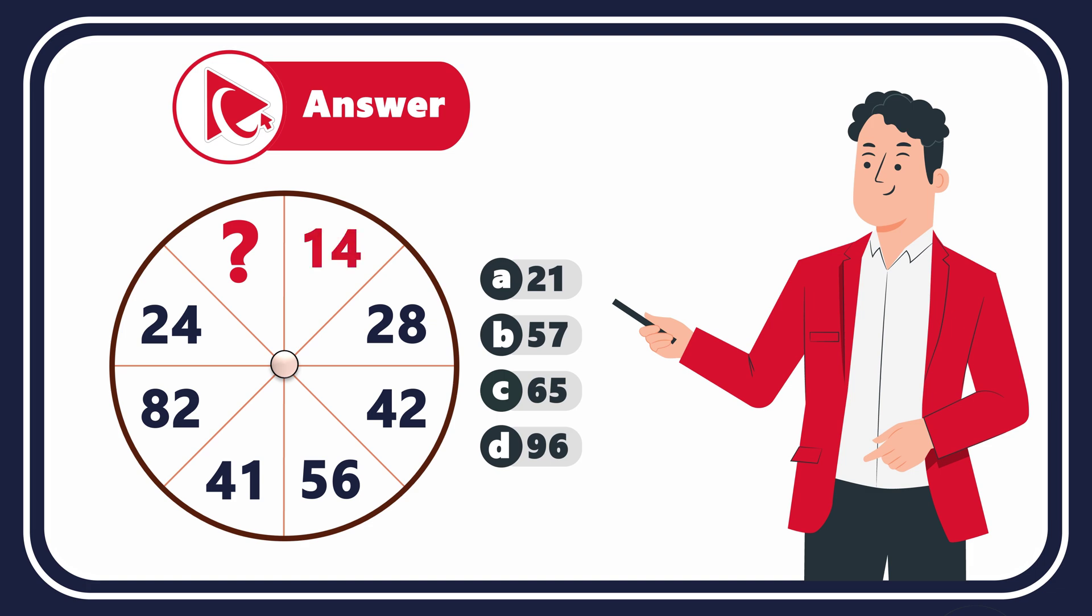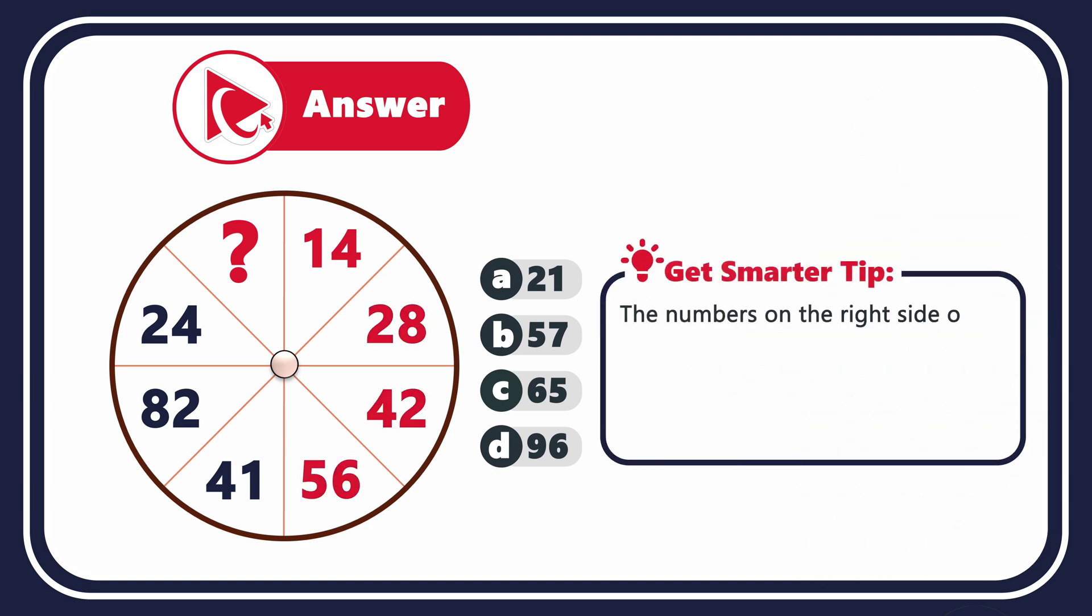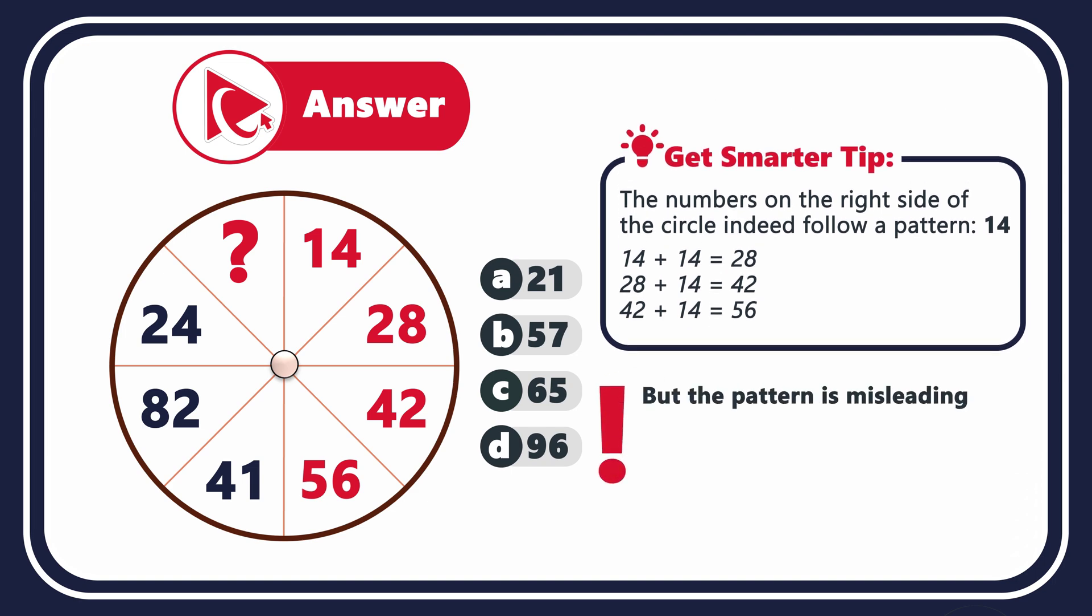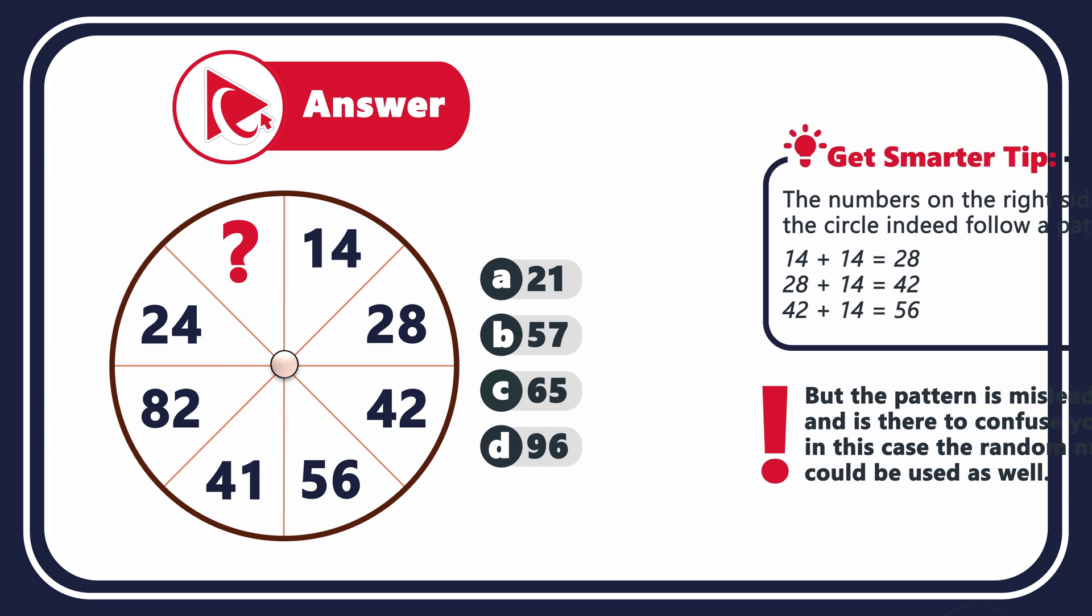Remember I told you that this question is tricky? Let's look in details why the answer is not obvious. Let's look at the numbers 14, 28, 42 and 56. As you can see, they all increase by 14. 14 plus 14 equals 28. 28 plus 14 equals 42. And 42 plus 14 equals 56. But then this pattern breaks and you see numbers 41, 82 and 24. Unfortunately, this pattern is misleading and it's there to confuse you. In this case, random numbers could have been used as well. So what is the right solution?